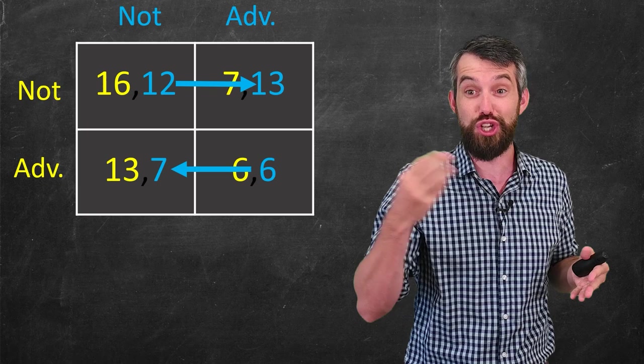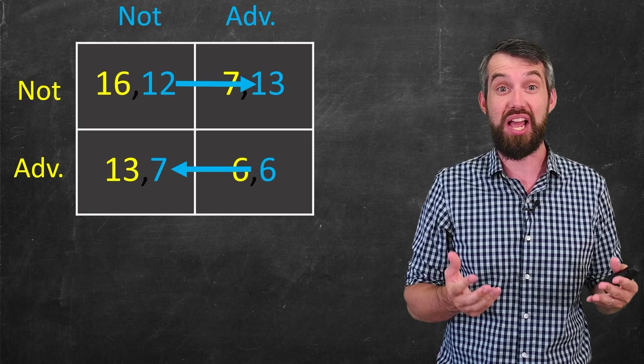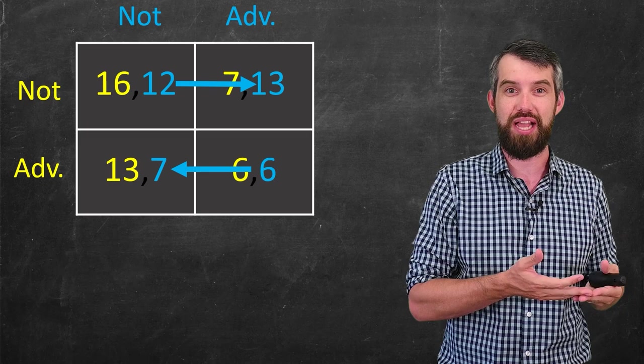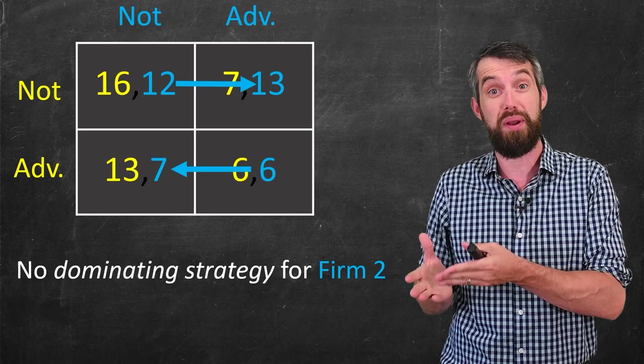In contrast, if you knew that firm one did advertise, so you're on the bottom, seven is bigger than six, and so firm two should not advertise. So there is not a dominating strategy for firm two, the way there was a dominating strategy for firm one.